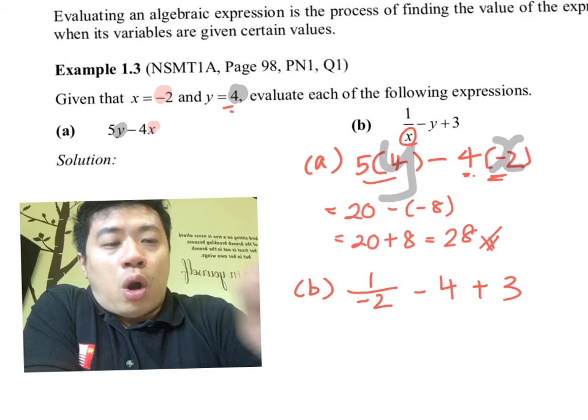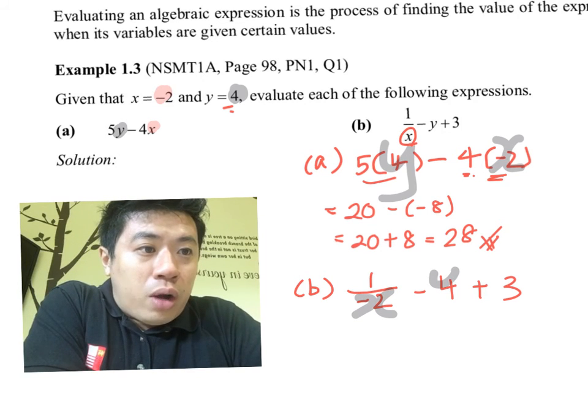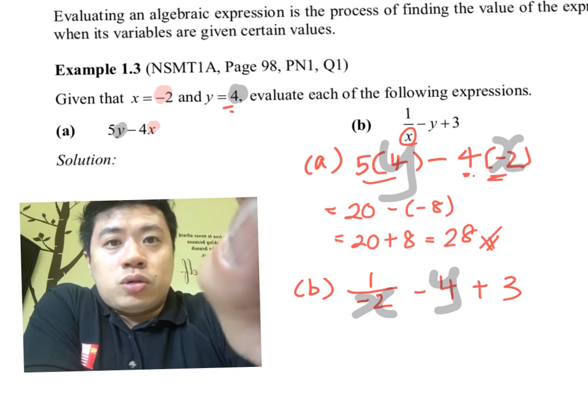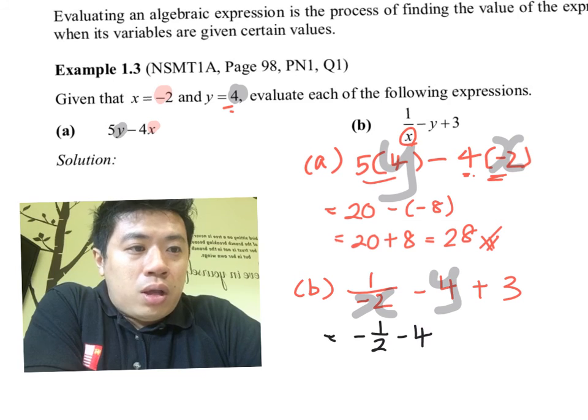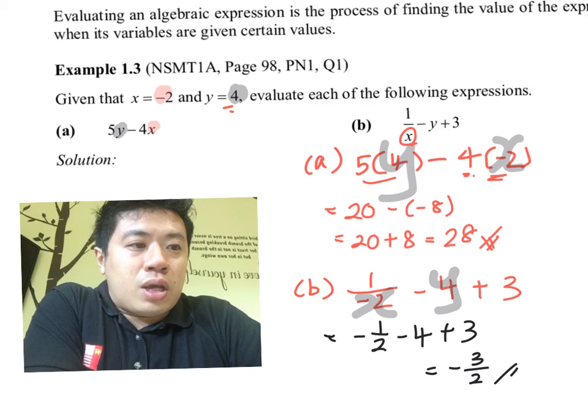When we evaluate, this is negative one-half minus 4 plus 3, and your final answer should be negative 3 over 2.